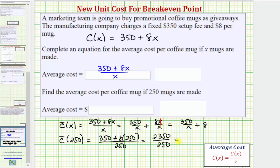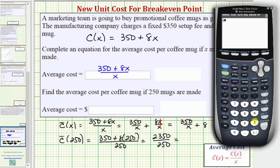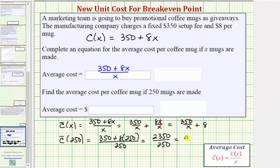And let's go ahead and find this quotient on the calculator. Here, 2,350 divided by 250 is equal to 9.4 which means the average cost per coffee mug is $9.40. So c̄(250) is equal to $9.40 per mug.